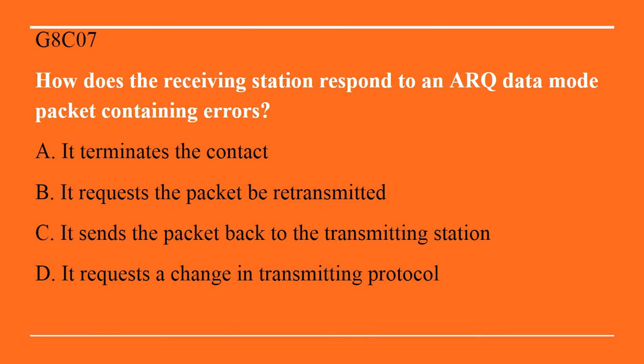G8C07: How does the receiving station respond to an ARQ data mode packet containing errors? A. It terminates the contact. B. It requests the packet be retransmitted. C. It sends the packet back to the transmitting station. Or D. It requests a change in transmitting protocol.